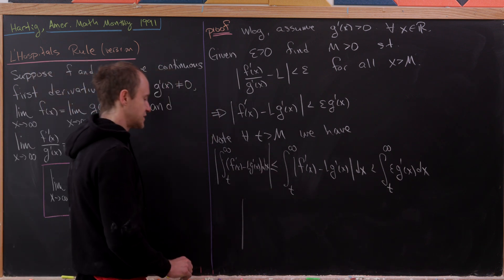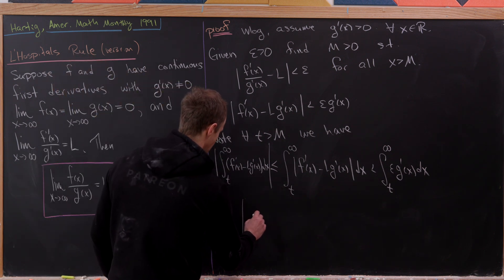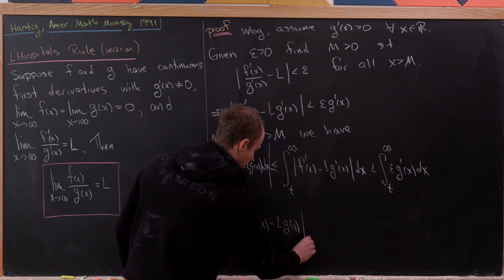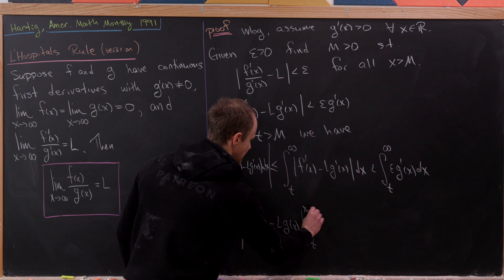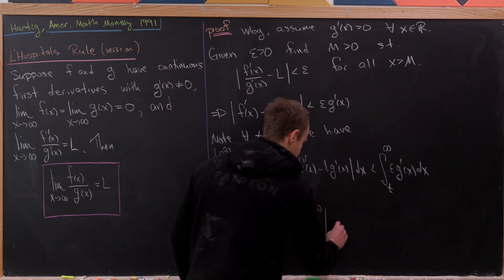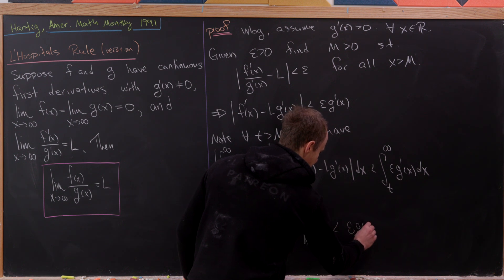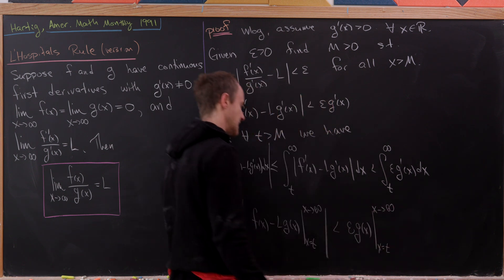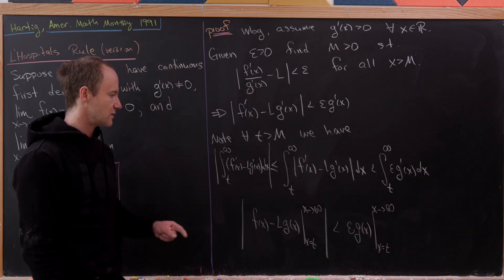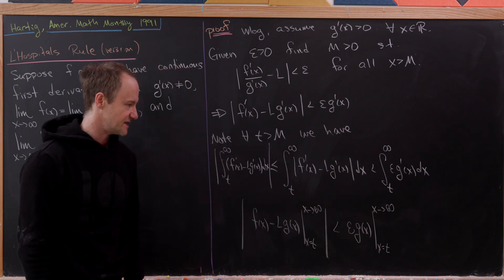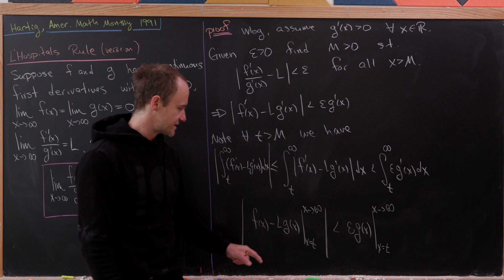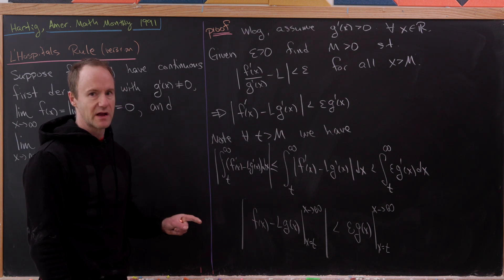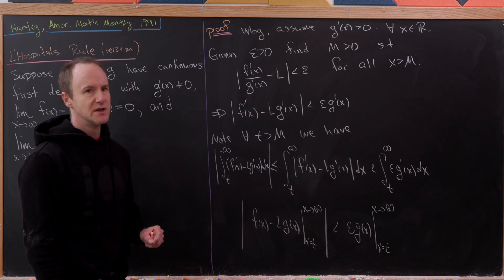Applying FTC to the extreme left, we get the absolute value of [f(x) − L · g(x)] evaluated from x = t to x → ∞, which is strictly less than epsilon · g(x) evaluated from x = t to x → ∞. As x approaches infinity, f and g both approach zero, so all we're left with is what happens at x = t. Since that's the lower bound, we pick up a minus sign, giving us |f(t) − L · g(t)| < epsilon · |g(t)|... wait — let me carry that forward.